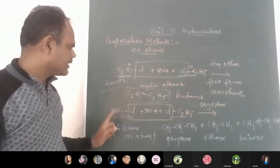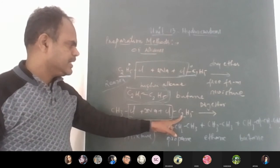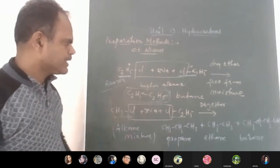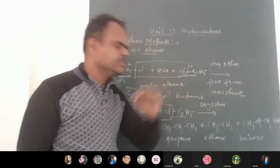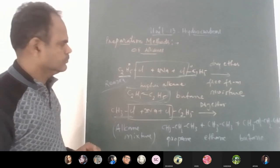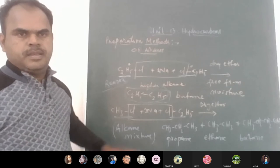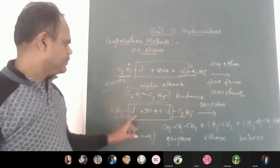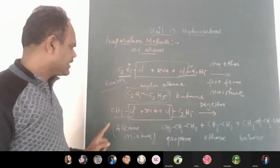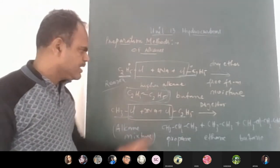The fourth method is decarboxylation of the sodium salt of carboxylic acids using soda lime. An example of a sodium salt of carboxylic acid is CH₃COONa, sodium ethanoate. When this salt is treated with NaOH plus CaO (the mixture called soda lime) and heated, decarboxylation occurs — CO₂ is removed and one hydrogen from the base is added, giving CH₄ plus Na₂CO₃. The product alkane has one fewer carbon than the carboxylic acid salt.